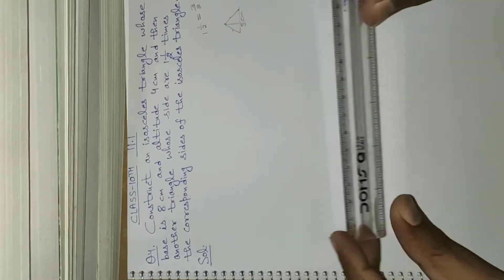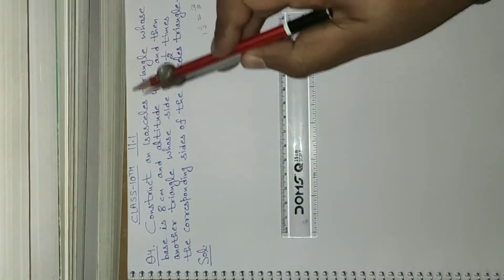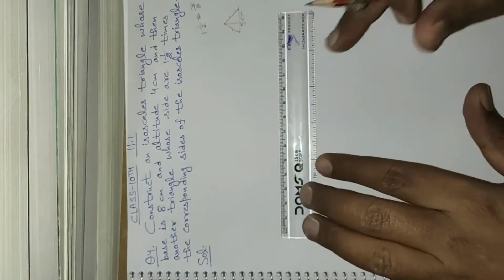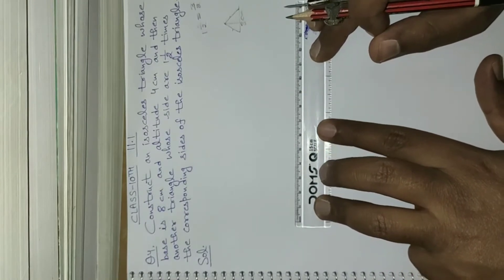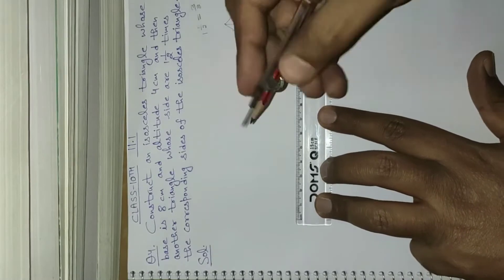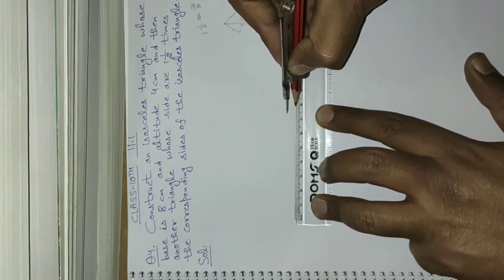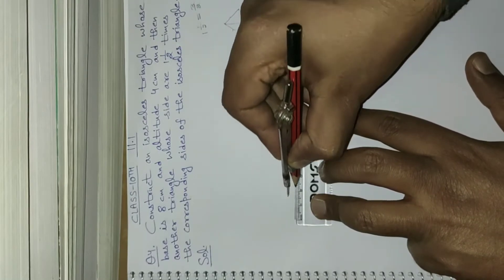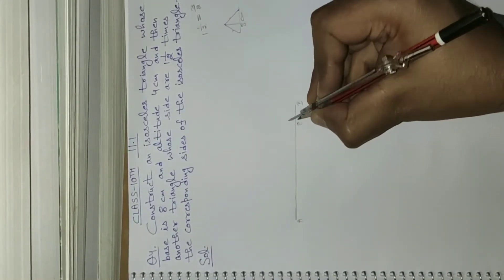Please see carefully. First, I shall take the base of this isosceles triangle as 8 centimeters. Here I'm taking the base as 8 centimeters. I shall name this as AB, and this is 8 centimeters.